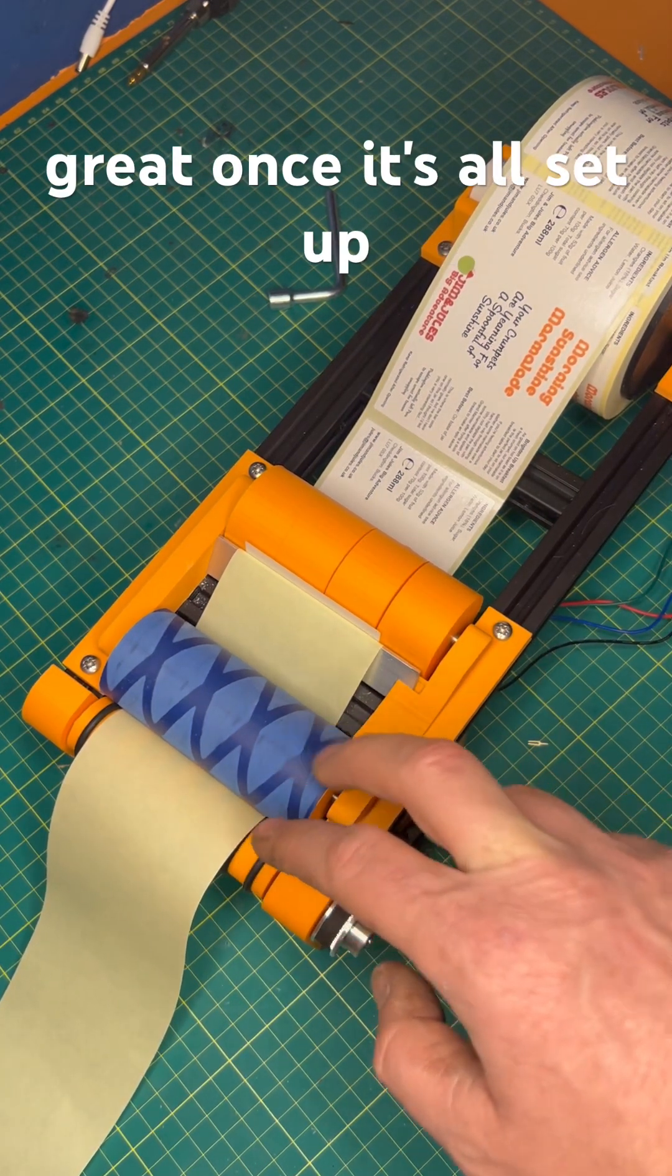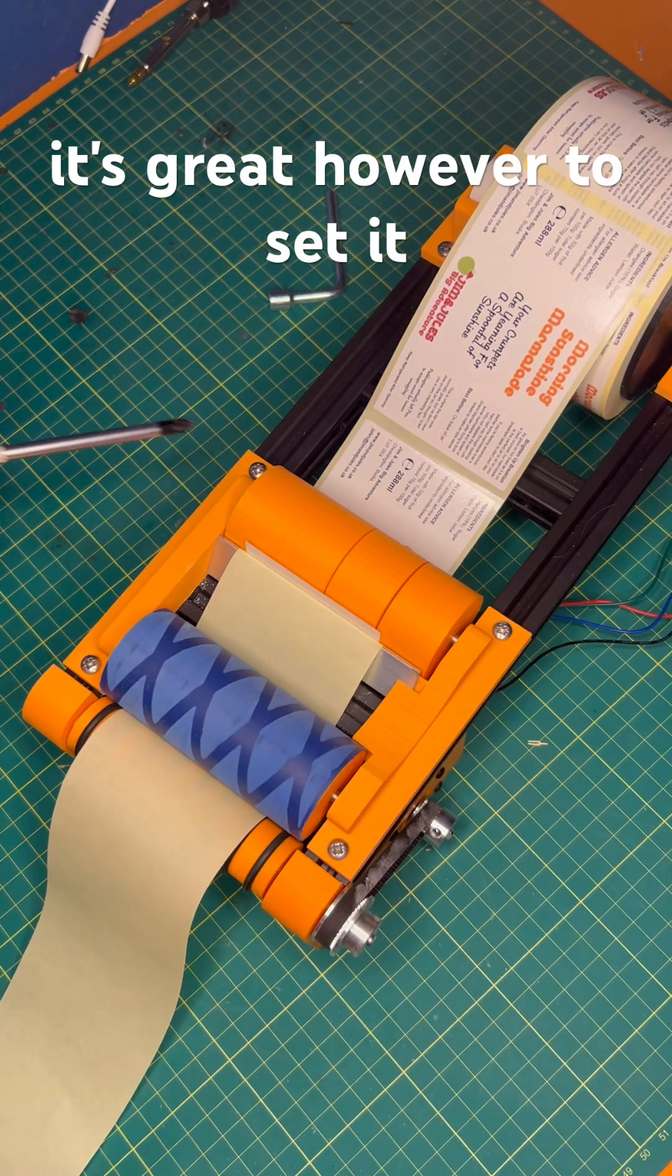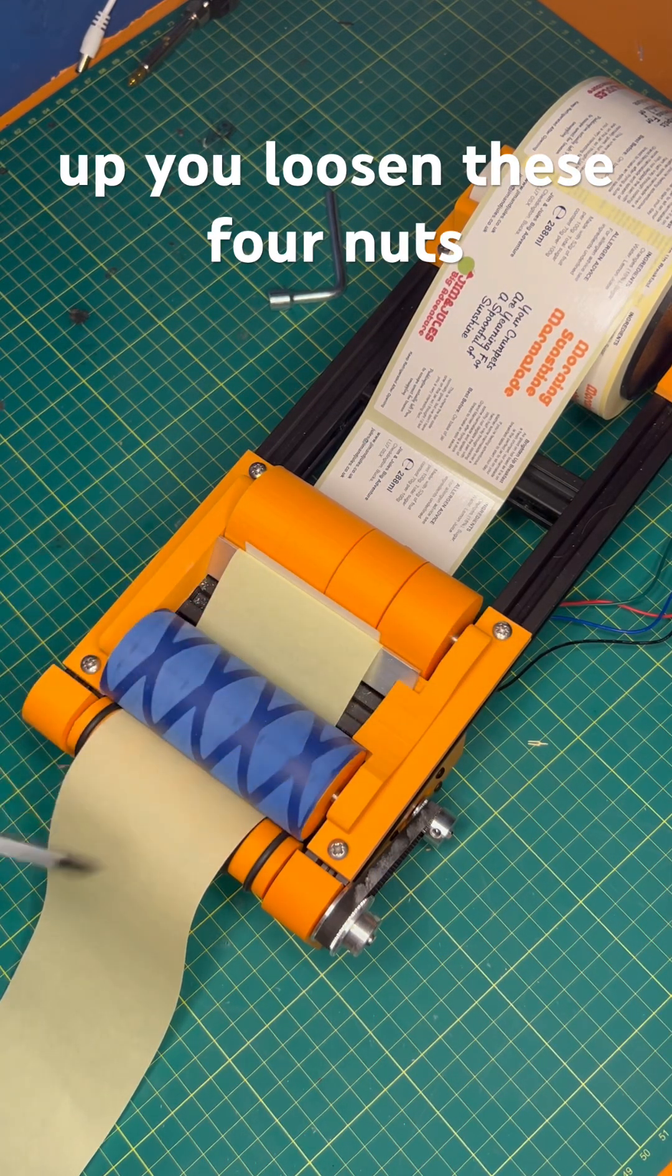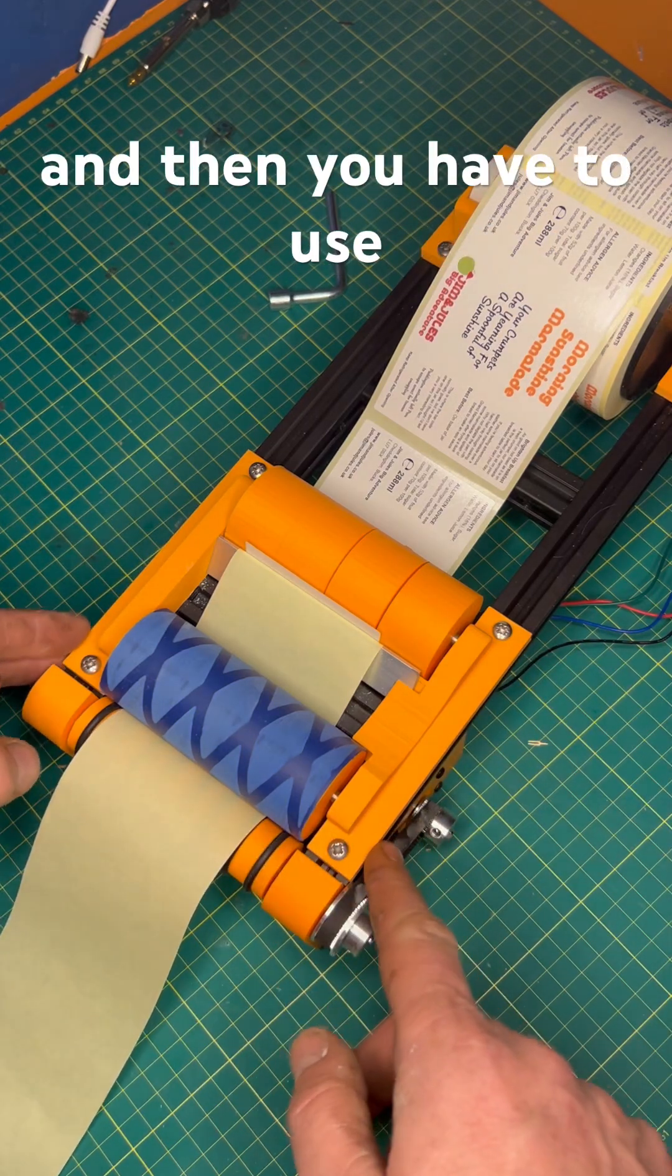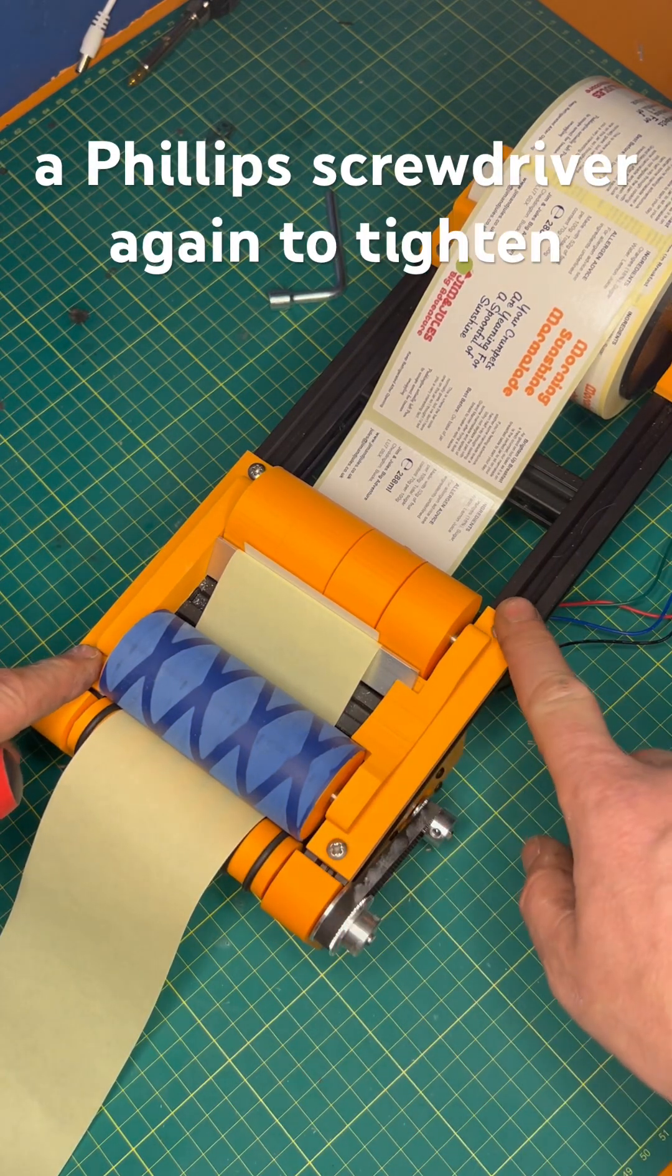That works great, once it's all set up it's great. However, to set it up you loosen these four nuts here, slide the carriage back so you can file it through, and then you have to use a Phillips screwdriver again to tighten them back up again.